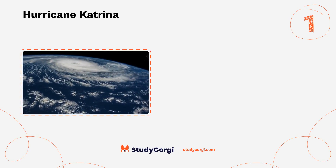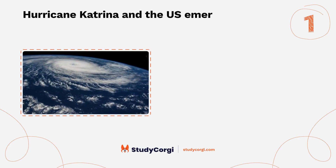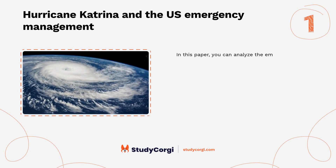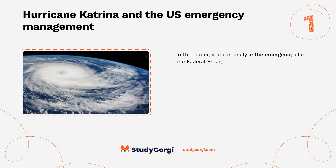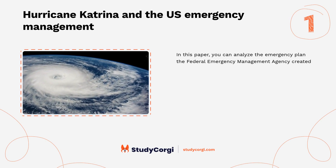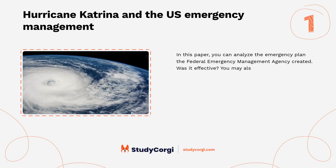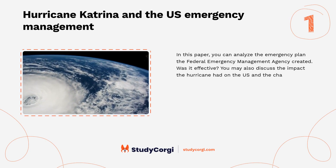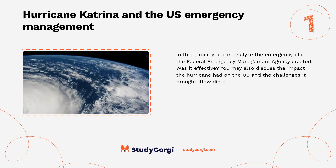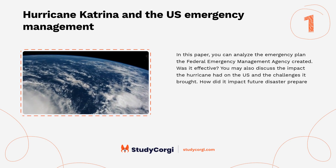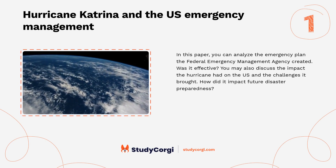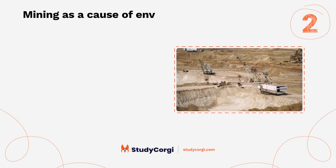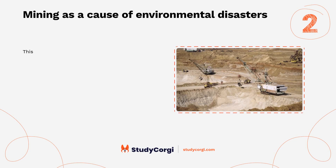Hurricane Katrina and the U.S. Emergency Management. In this paper, you can analyze the emergency plan the Federal Emergency Management Agency created — was it effective? You may also discuss the impact the hurricane had on the U.S., the challenges it brought, and how it impacted future disaster preparedness.